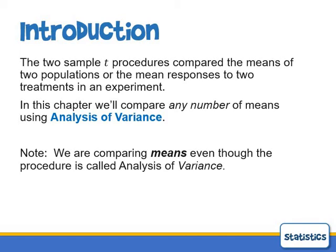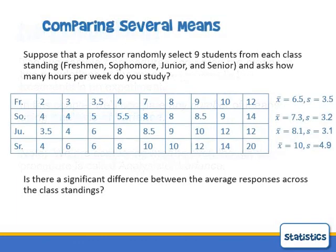We're going to look at what's called the One-Way Analysis of Variance, where we have a single variable we're interested in but multiple groups. For example, suppose a professor randomly selected nine students from each class standing — freshmen, sophomore, junior, and senior — and asked how many hours per week do you study. We have a table here of the actual values.